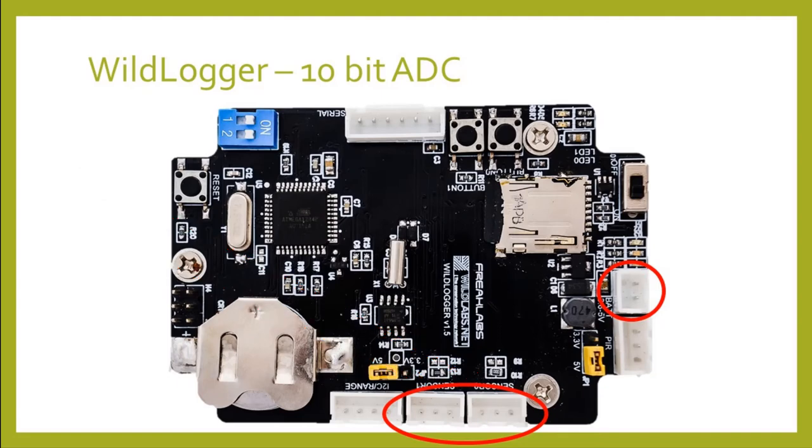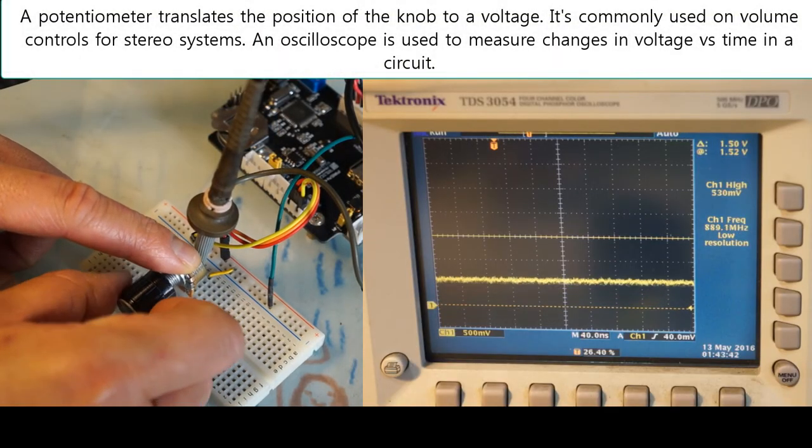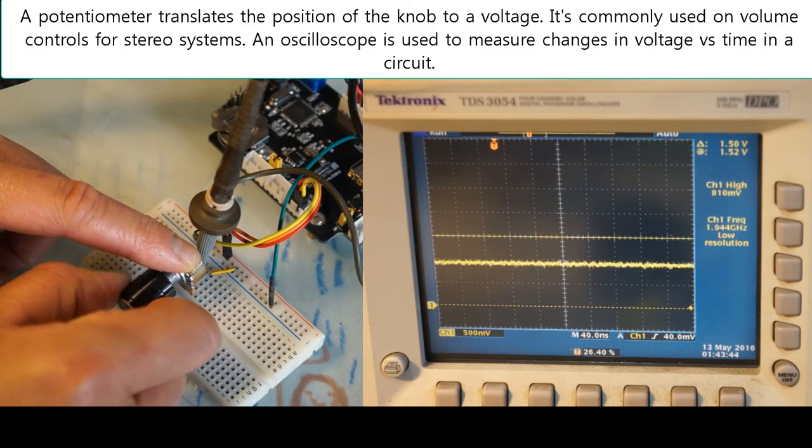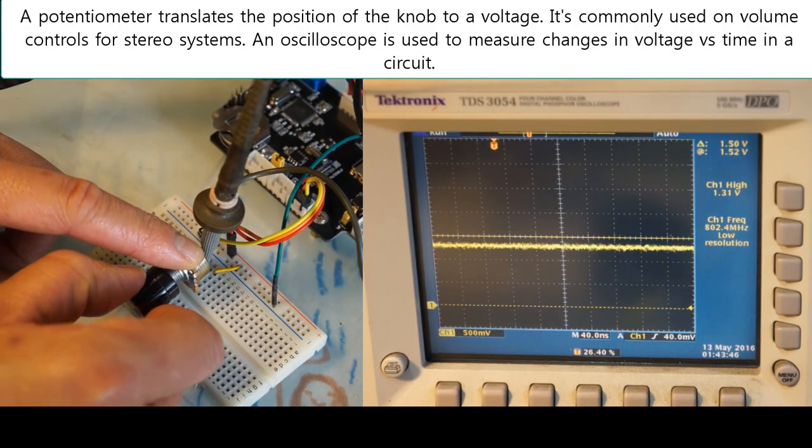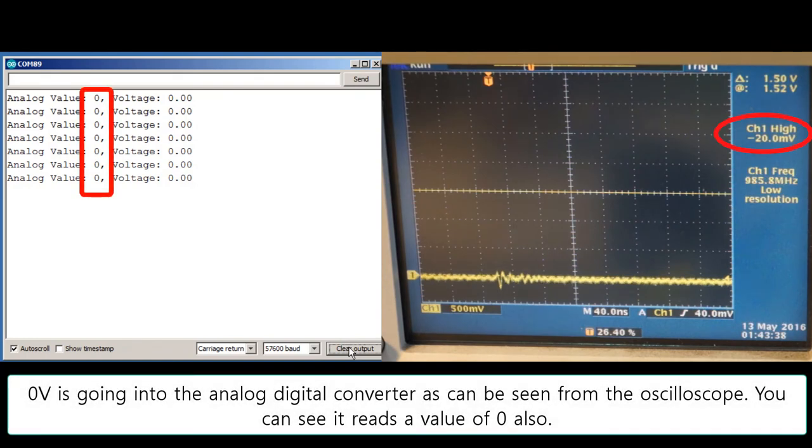I've put together a little demonstration of the wildlogger ADC in action. I've used a variable resistor, or a potentiometer, which can output a varying voltage depending on the position of the knob. In this demonstration, I've connected the output of the potentiometer to sensor port 0 on the wildlogger.